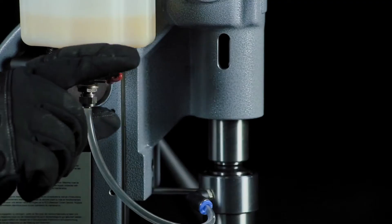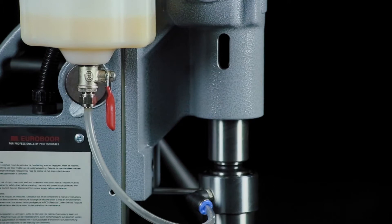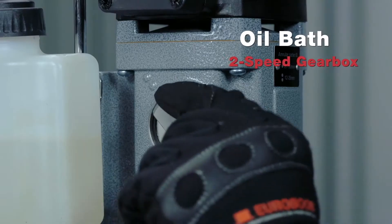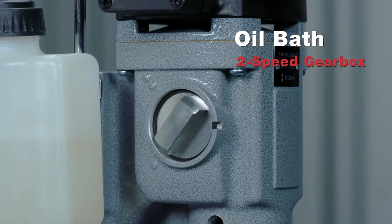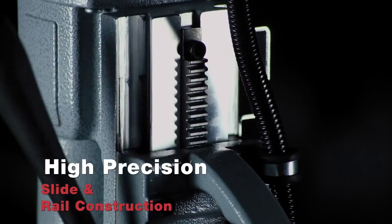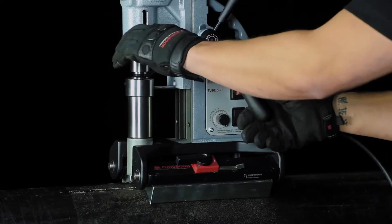Detachable Morse Taper 3 spindle with internal lubrication. Integrated oil bath gearbox with two mechanically adjustable gears. High-precision slide and rail construction results in faster and more accurate drilling.